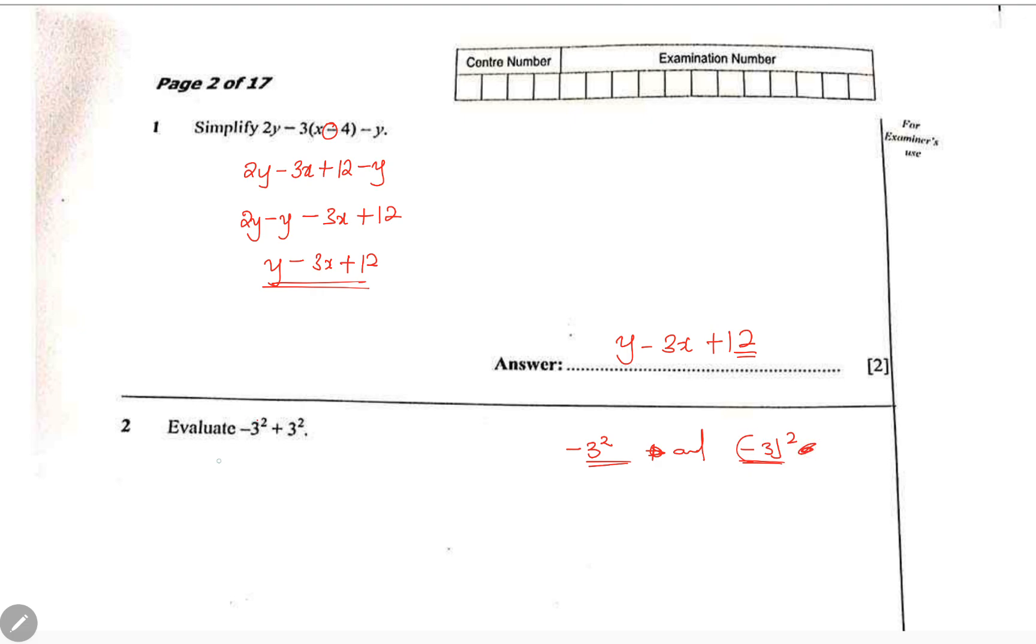So here the only thing that is being squared is three which is nine. Same thing here, there is only three which is being squared. The positive is not being squared, which is nine. To give you zero all together, it's done.